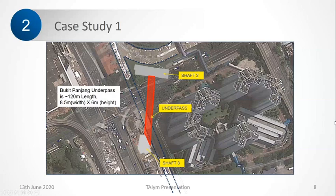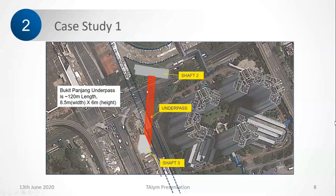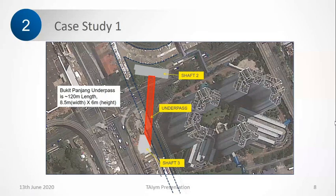To construct this underpass connecting the two shafts, it has to be an undercrossing because it's going to be very shallow. Ideally, cut and cover is the best method since you just cut, construct the box structure, and cover it. But there are numerous utilities, roads, and a canal which cannot be diverted or compromised. So the method we had to use was pipe-roof jacking.